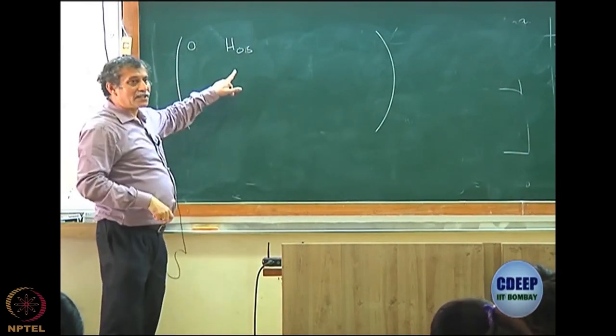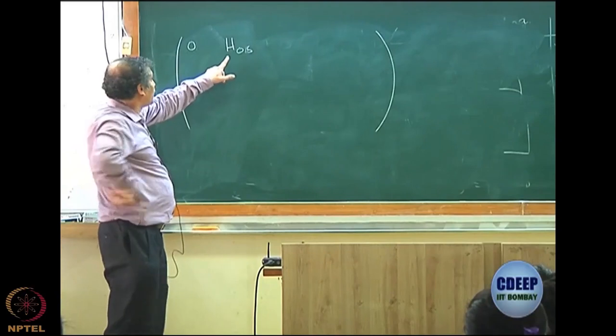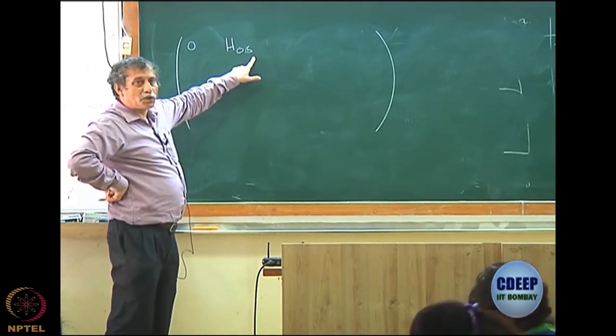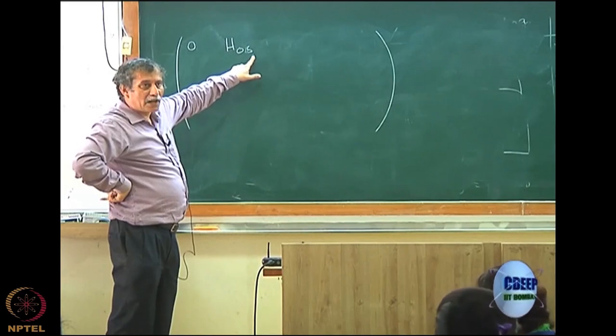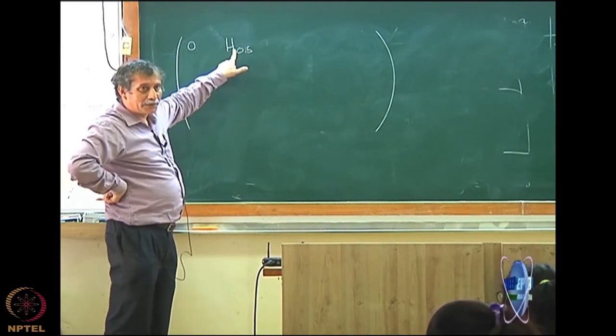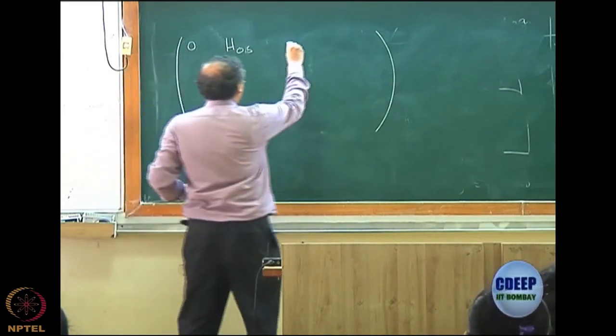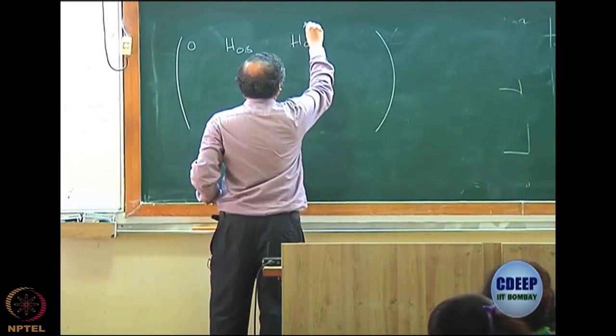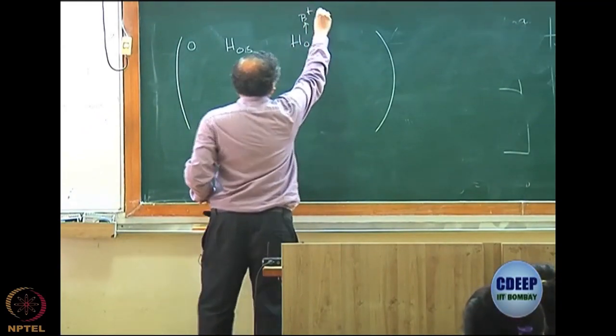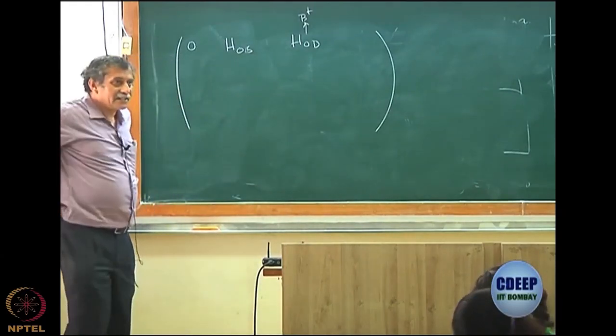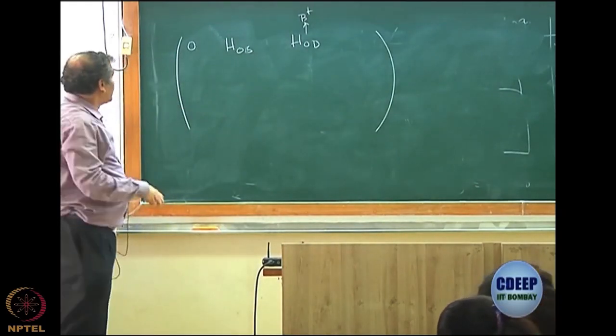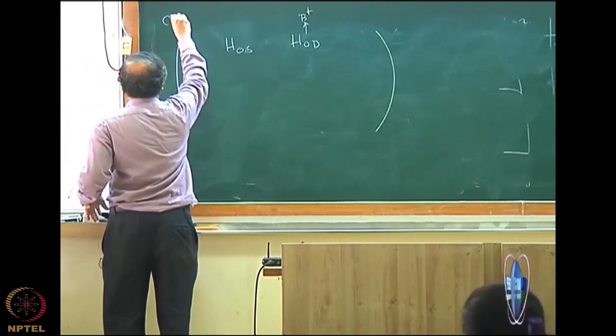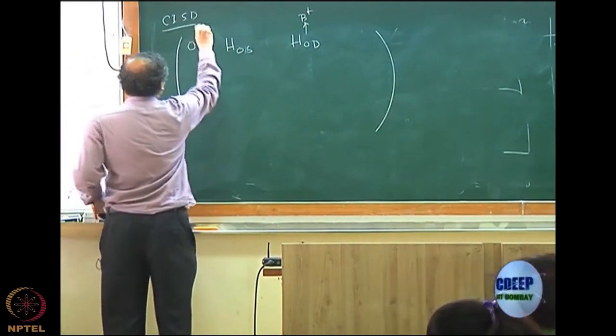I hope you will be able to understand now. This is the matrix of the Hamiltonian between Hartree-Fock and singly-excited. Remember it should be H minus E Hartree-Fock, but it is not necessary to write E Hartree-Fock for the first term. Then I have H0D. This was essentially what I call B dagger in the previous exercise. So it is a three block. What I am now writing is a CISD equation.